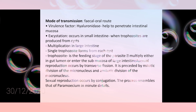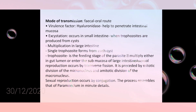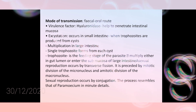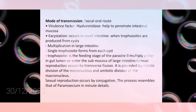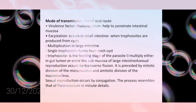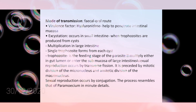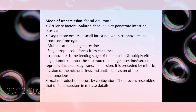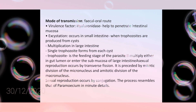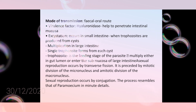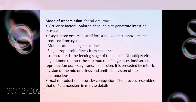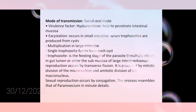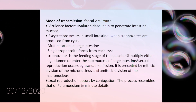The virulence factor is the enzyme hyaluronidase, which helps to penetrate the intestinal mucosa and is secreted by the cyst wall. It is released into the intestine when trophozoites are produced. The trophozoites later form cysts after multiplication in the large intestine. The trophozoite is the only feeding stage.